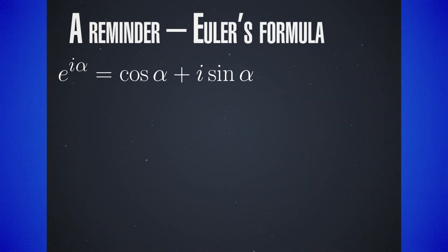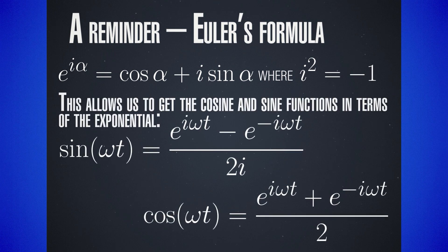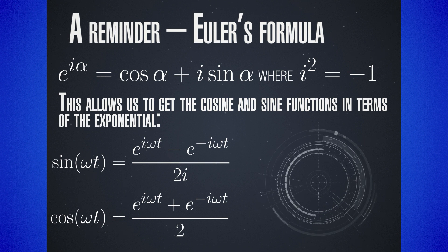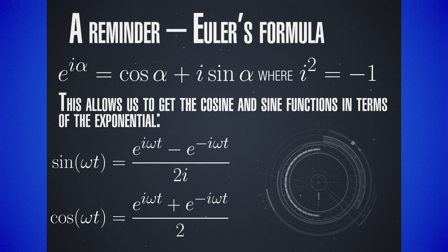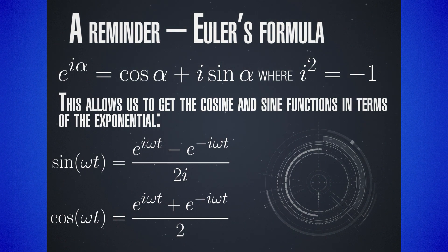First, a reminder from high school, first year of university, or a complex analysis course: Euler's formula. As you may recall in complex analysis, we can represent an exponential function through sine and cosine. An exponential with an argument of the imaginary unit times some phase can be written as the cosine of that phase plus an imaginary part which is the sine of that phase. A complex exponential has real part cosine and imaginary part sine. Here i is simply the imaginary unit — i squared gives minus 1. By adding or subtracting e^(iα) and e^(-iα) we can easily get formulas for sine and cosine in terms of complex exponentials.